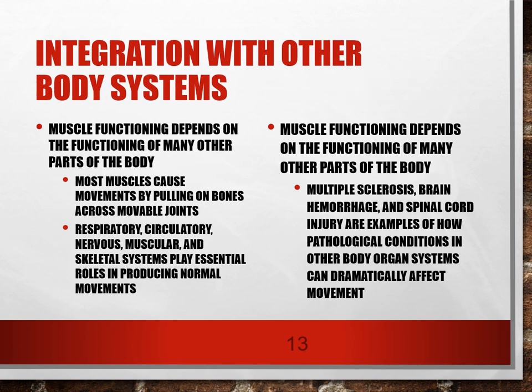As the textbook authors stated best: each part of the body is one of many components in a large interactive system that maintains homeostasis, and the normal functioning of one part depends on the normal function of other parts. The respiratory, circulatory, muscular, and skeletal systems all play an essential role in producing normal movements, not to mention the nervous system as well. When a disorder or disease impacts one body system, that could potentially impact other body systems.